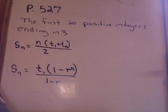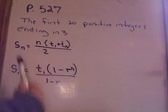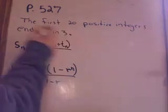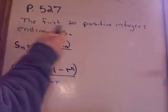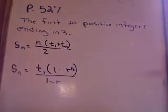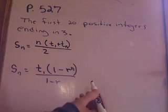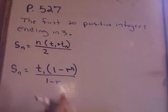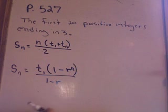Okay, I'm going to do some examples using the formulas for the sum of arithmetic series and geometric series. The first example here is, find the sum of the first 20 positive integers ending in 3. That is a series, and we need to figure out is it arithmetic or geometric, and then how do I find that sum.